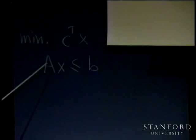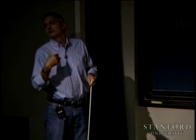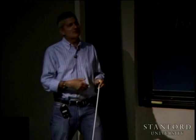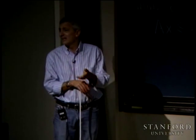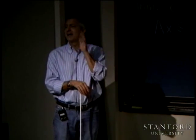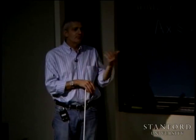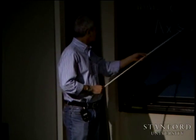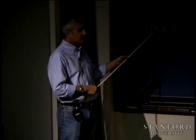If Ax is not ≤ B, you find the maximum violated one — it doesn't matter, you can take any violated one. If you evaluate all of them, the cost of evaluating Ax is MN.